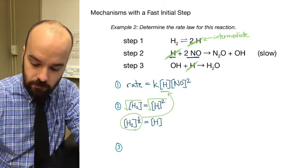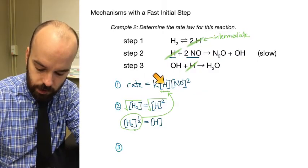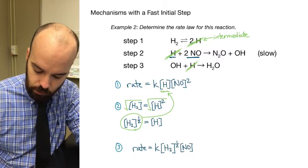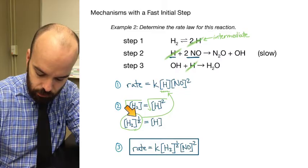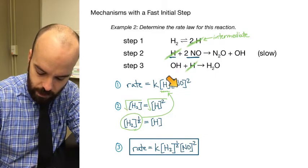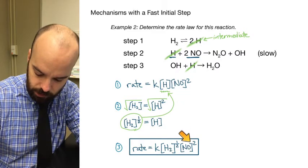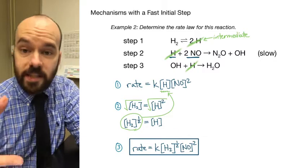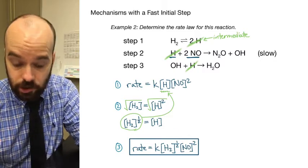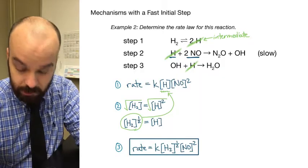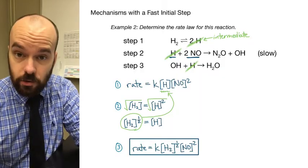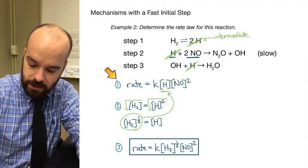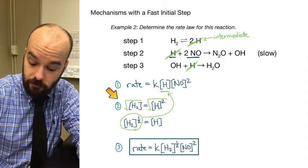Now we substitute [H₂]^(1/2) in for [H] in our rate law and rewrite it: rate equals k times [H₂]^(1/2) times [NO]². This is our overall rate law, and it shows how we can get a half-order reaction with respect to one of our reactants — in this case H₂.